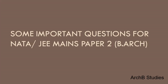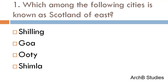The first question is: which among the following cities is known as the Scotland of the East? Options: Shillong, Goa, Ooty, or Shimla? The correct answer is Shillong.